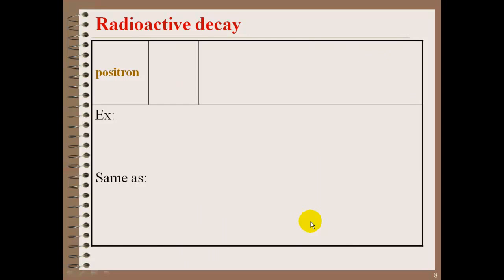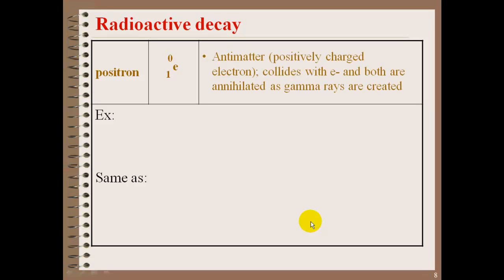A positron, very interesting particle here. A positron is actually a positive electron. This is considered antimatter because it's a positively charged electron. And what ends up happening with a positron is when it's given off, it will usually collide with an electron in the electron cloud, and they're annihilated. And when that happens, a gamma ray will be produced.